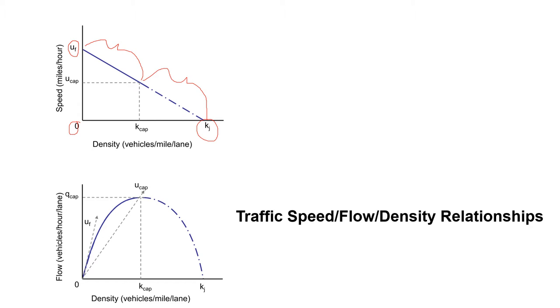The next relationship is density and flow — density in vehicles per mile per lane and flow in vehicles per hour per lane. This has a parabolic shape, with a solid portion at or under capacity and a dashed portion over capacity. At the peak of the flow we have the flow at capacity, Q sub cap, which is the maximum flow. That also coincides with our density at capacity. If we draw a line from the origin to that point, the slope gives us the speed at capacity.